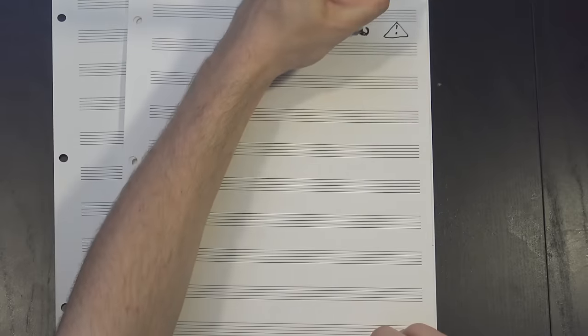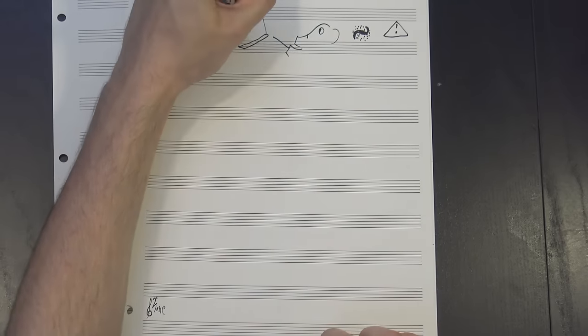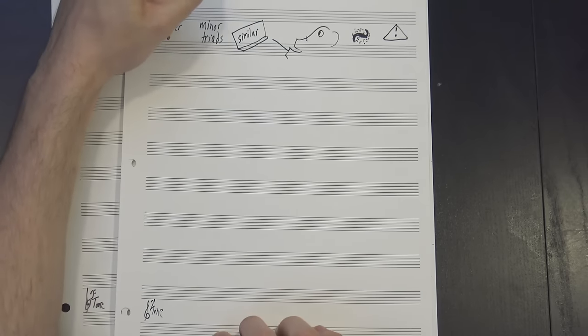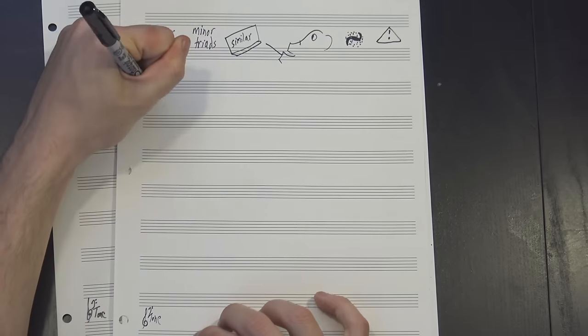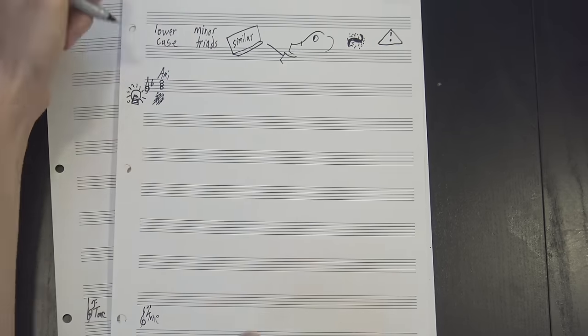As a brief aside, this notation definitely isn't universal. There's a couple different schools of thought on how best to approach it. They're all pretty similar, but many people prefer to show minor triads by writing the Roman numerals in lowercase, so our A minor would just be III. I don't use that system, but you'll definitely encounter it at some point, so you should probably know what it means.